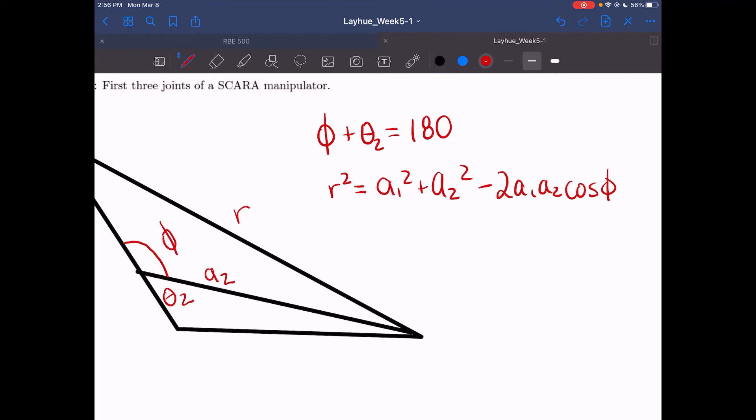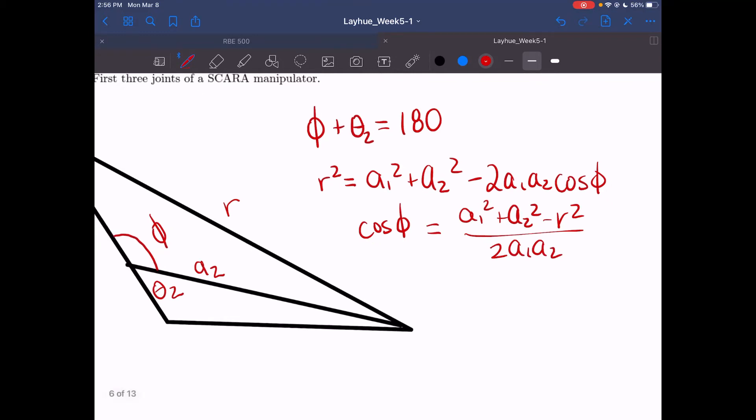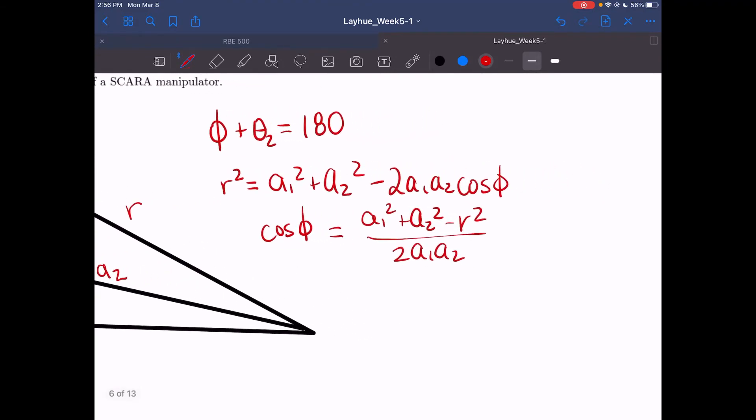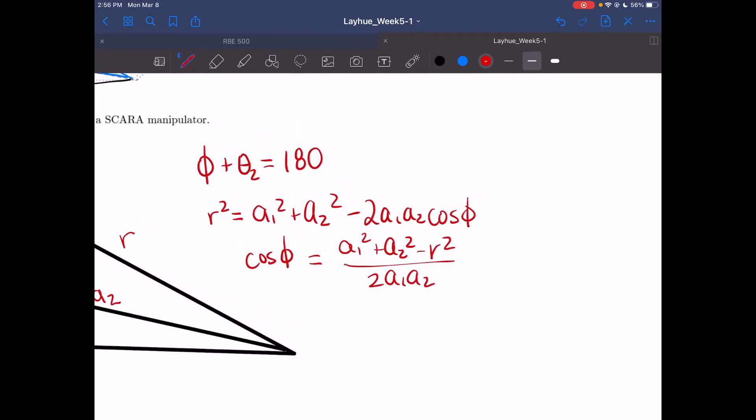So now looking at the triangle we have with a1, a2, and r, we can use law of cosines. Law of cosines, in this case, translates to r squared equals a1 squared plus a2 squared minus 2a1a2 cosines of that opposite angle, which is phi. If we rearrange this, we can get this explicitly for cosines of phi.